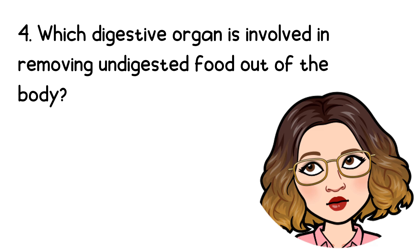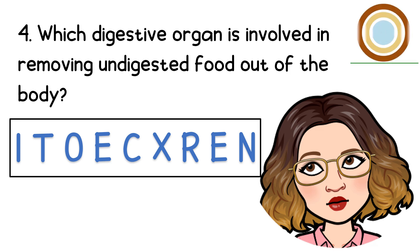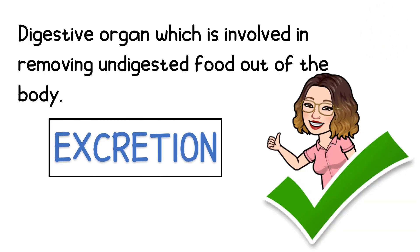Number 4: Which digestive organ is involved in removing undigested food out of the body? Nice! Excretion is the process involved in removing undigested food out of our body.